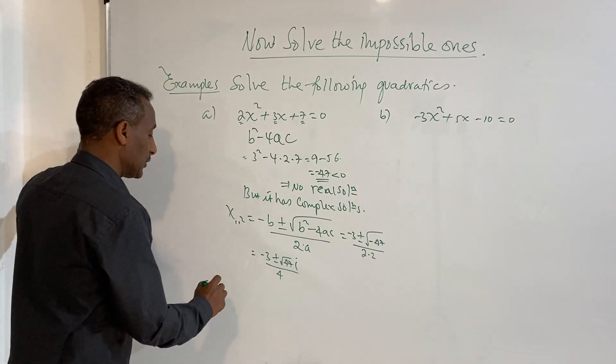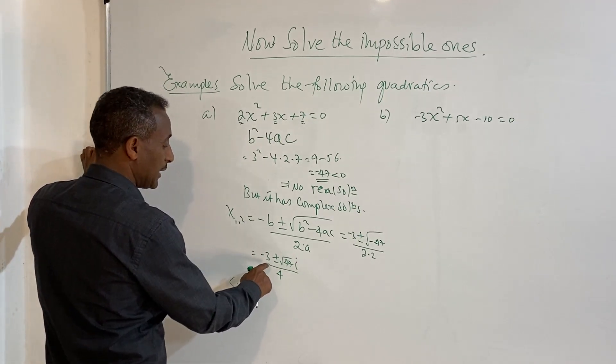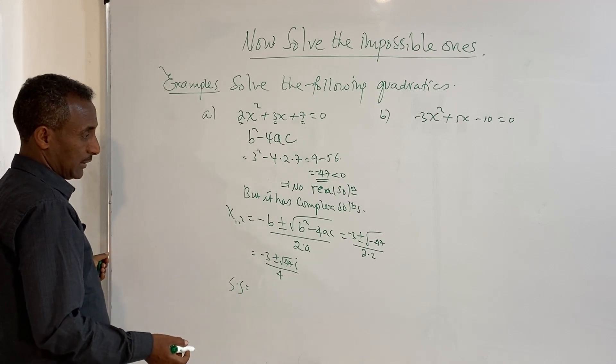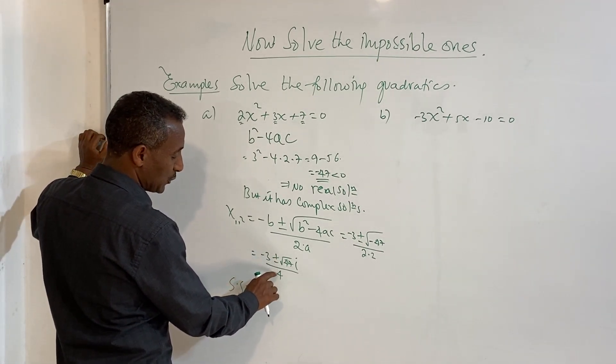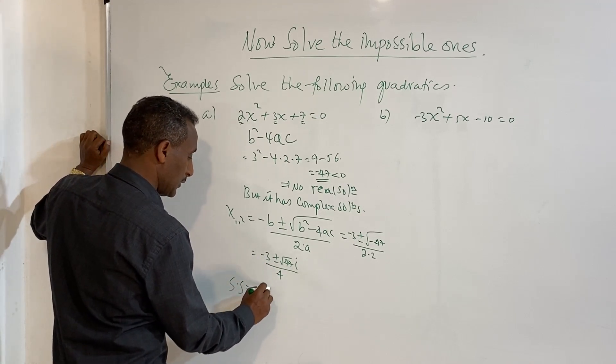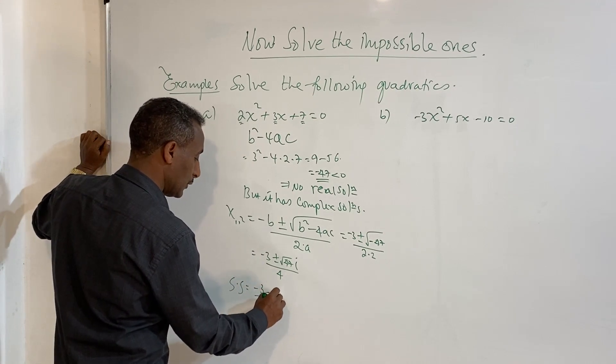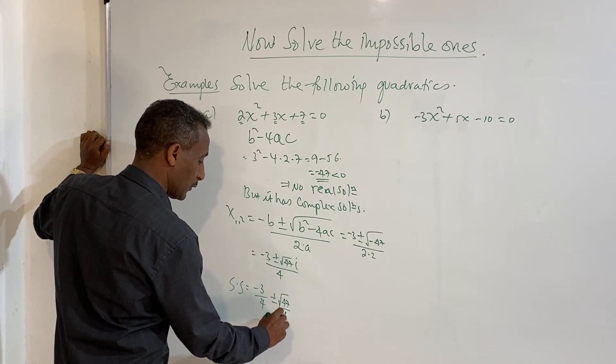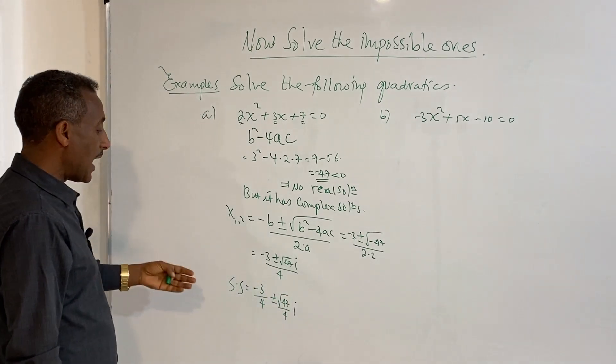So, minus 3 plus or minus square root of 47i over 4. What's the last step?